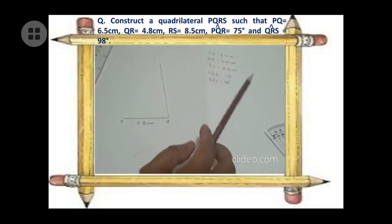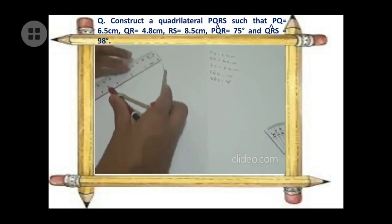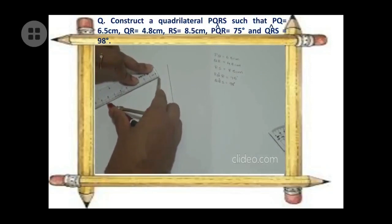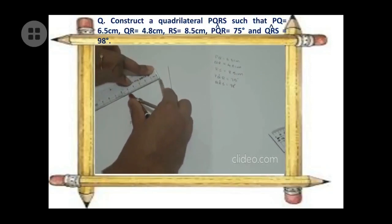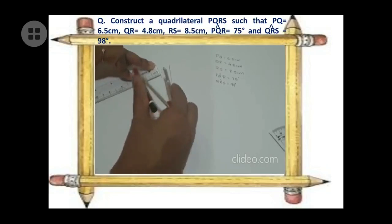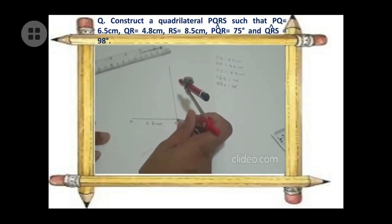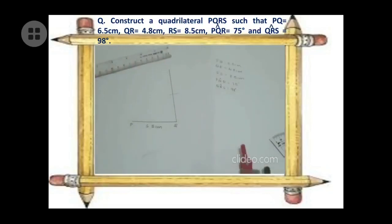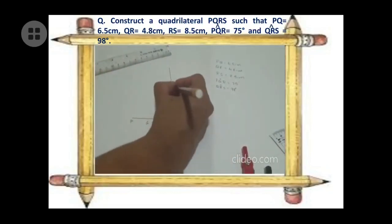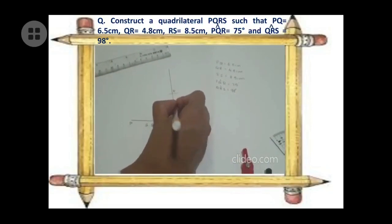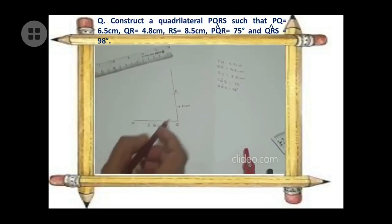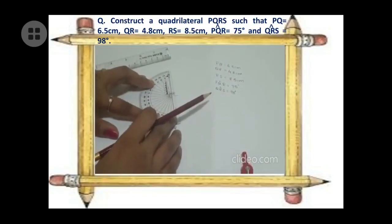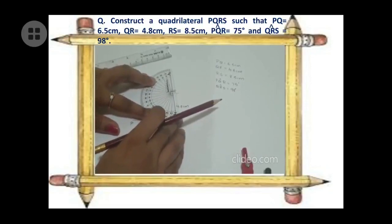Since QR = 4.8 cm, take 4.8 cm on your compass, keep it at Q, and draw an arc on the angle line you just drew. The point where the arc cuts the line is point R, which is 4.8 cm from Q. Now place your protractor at R to mark angle R = 98 degrees.